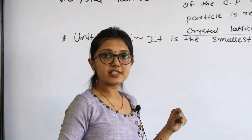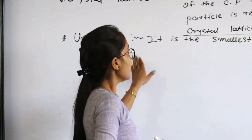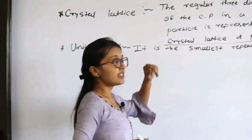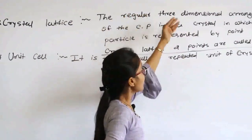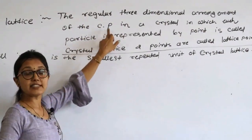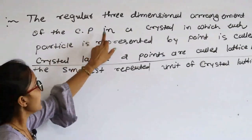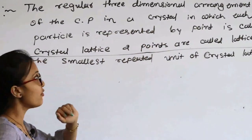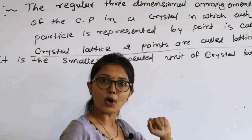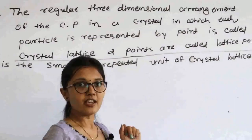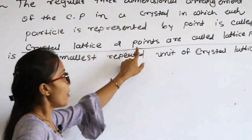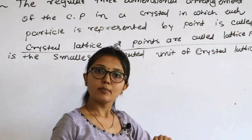How do we define crystal lattice? This is the definition of crystal lattice: the regular 3-dimensional arrangement of constituent particles (CP) in a crystal, in which each particle is represented by a point, is called crystal lattice. These points are called lattice points.